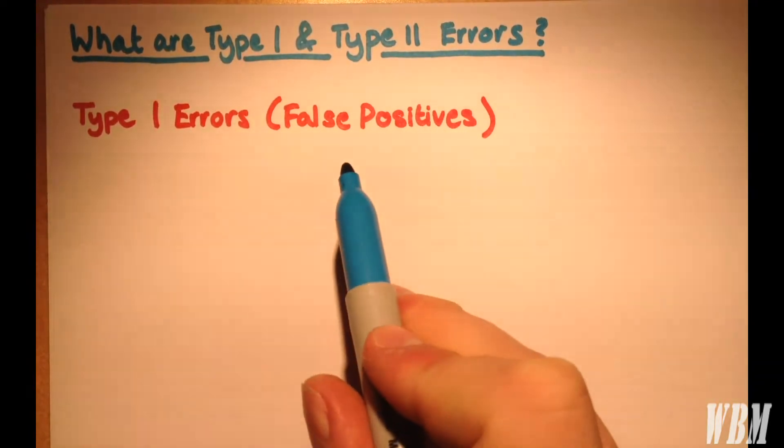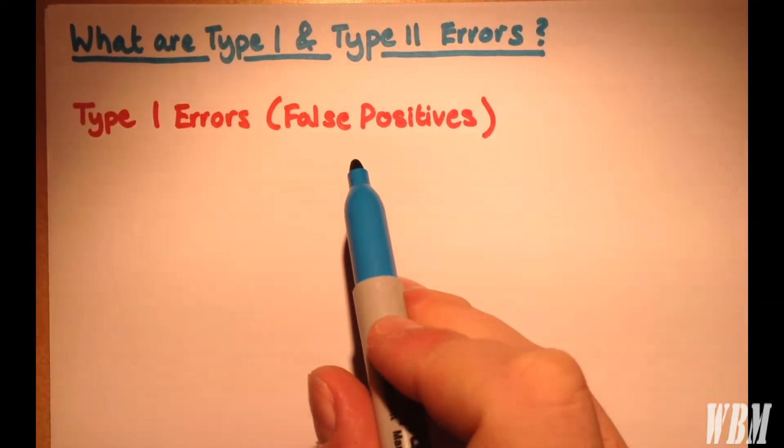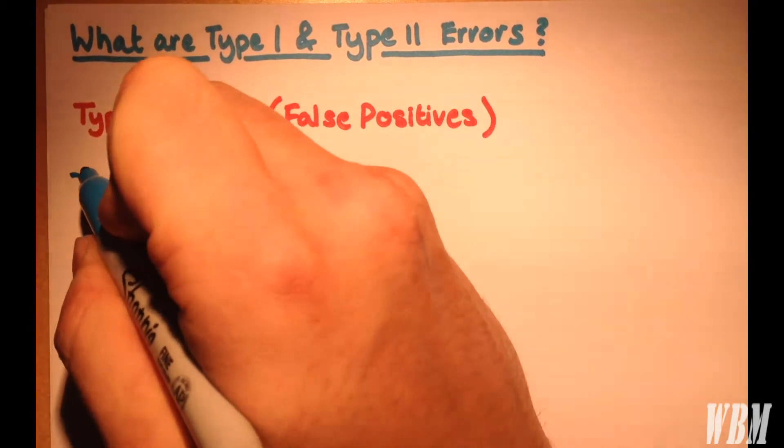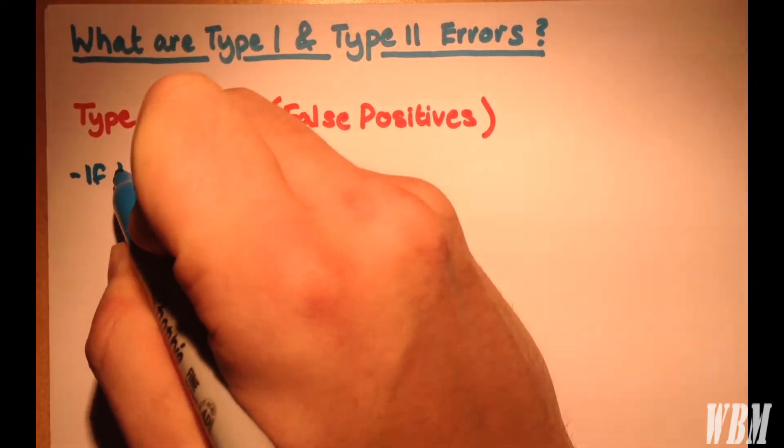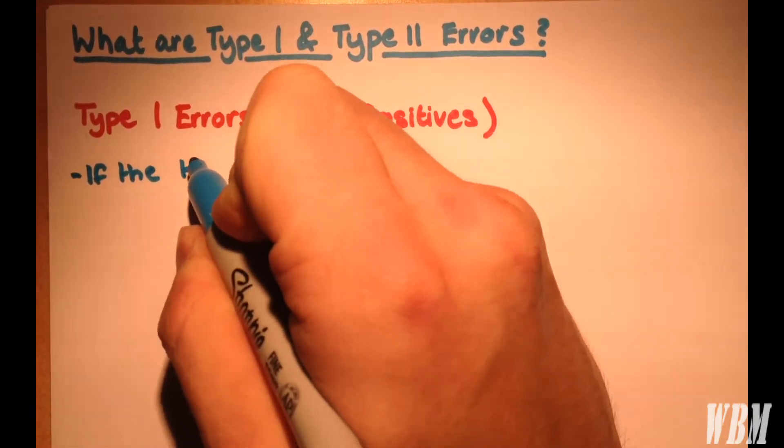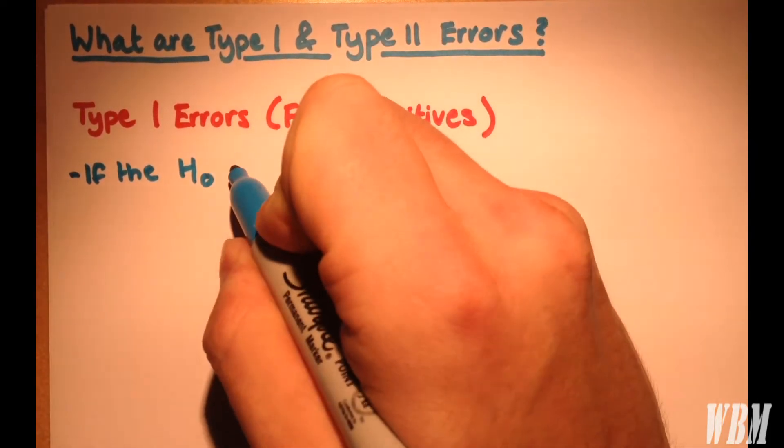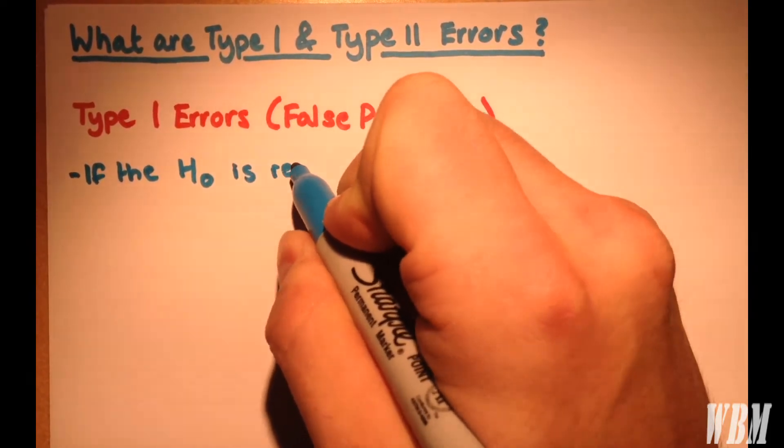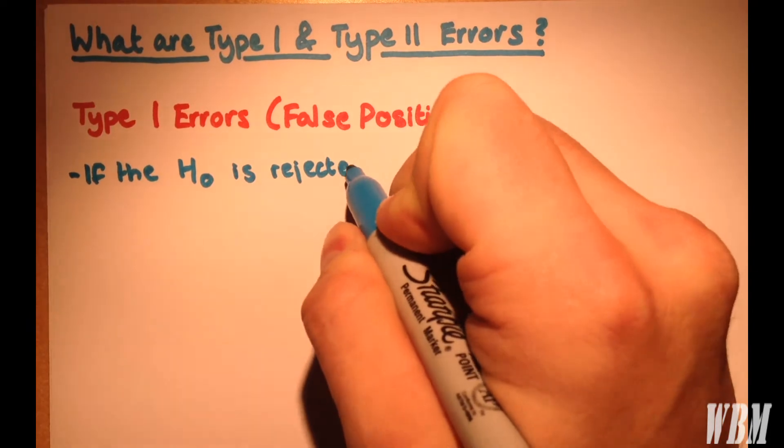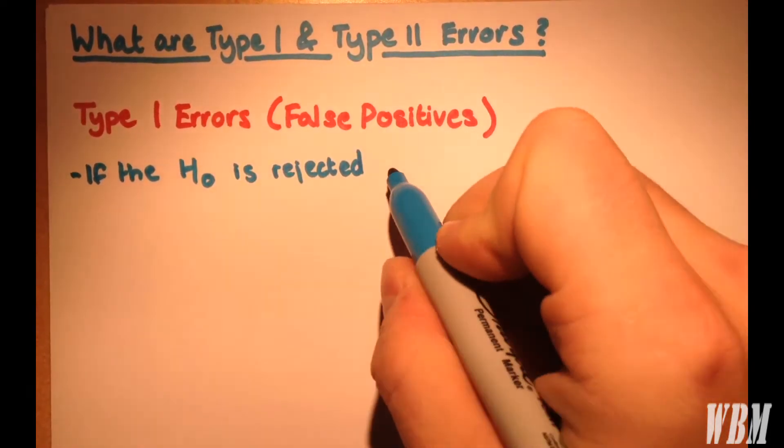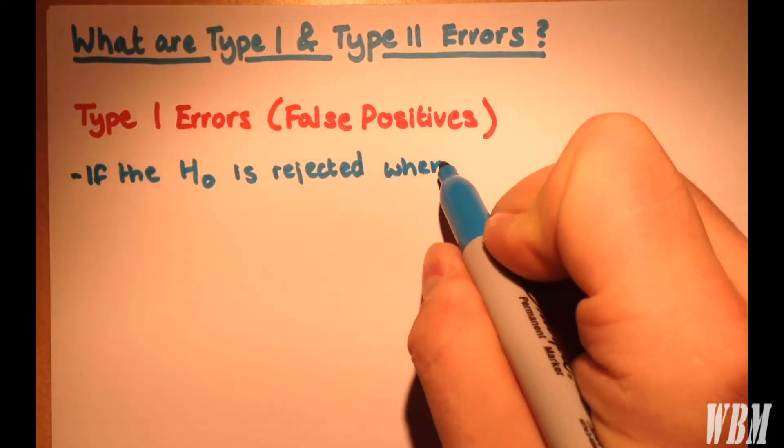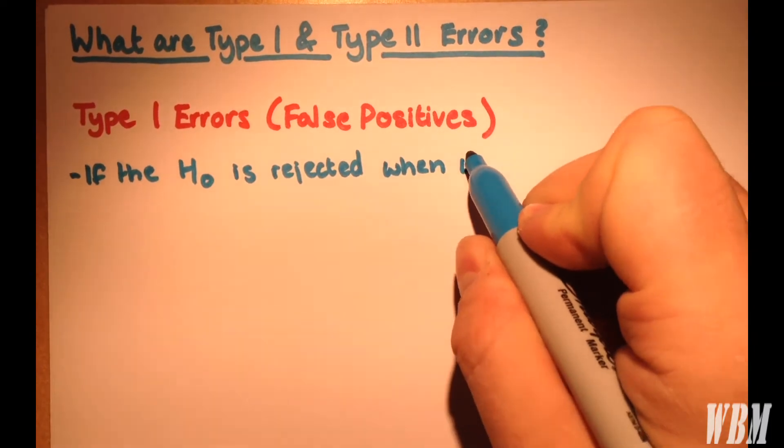A Type 1 error, also known as a false positive, is if the null hypothesis is rejected when it's actually true. As you can see, that would be a big problem.